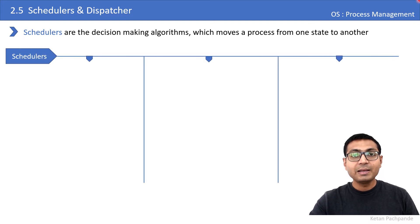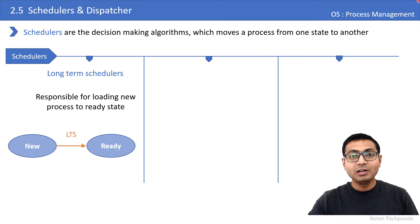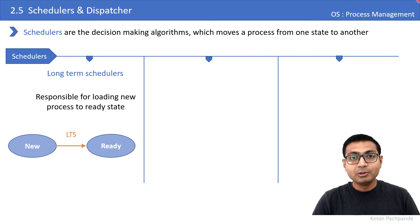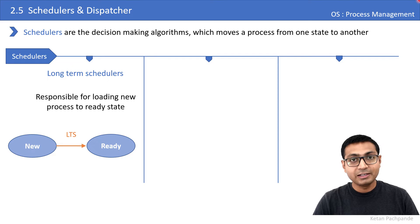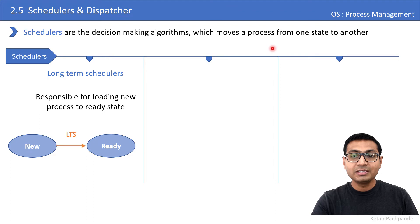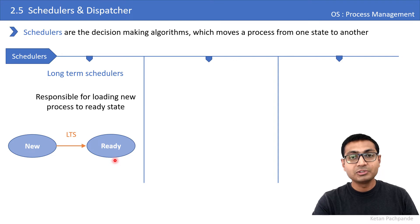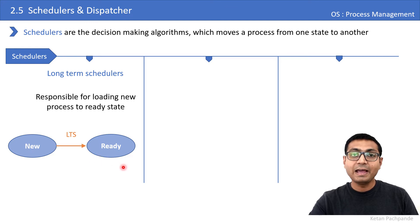There are three types of schedulers in the operating system. The first is called the long-term scheduler, which is responsible for loading new processes created by the user into the ready state. This transition from new state to ready state is decided by the long-term scheduler. If the long-term scheduler denies this transition, the process creation has failed.